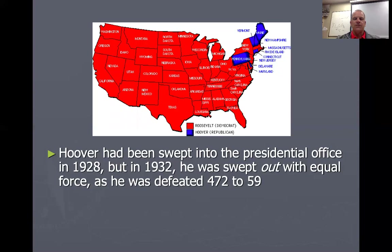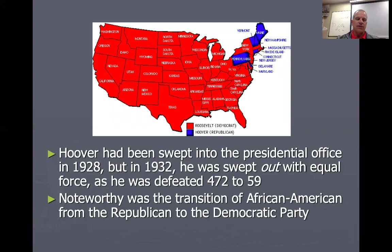You could see what a massive victory it was for FDR — 472 to 59 in the electoral vote count. Noteworthy here was the transition of African Americans from the Republican Party, the party of Lincoln, to the Democrat Party, the party of Roosevelt, who they thought would be someone who could definitely help them out.